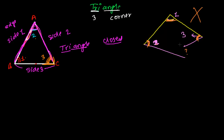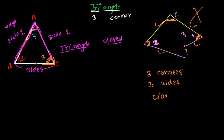Another problem with an open figure is that it may have four line segments instead of three. A triangle must have exactly three corners, three line segments forming three sides, and the figure must be closed. If you have three sides connecting at three corners, the figure will automatically be closed.